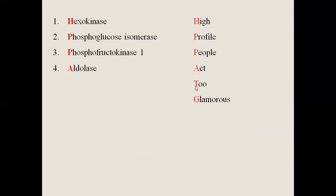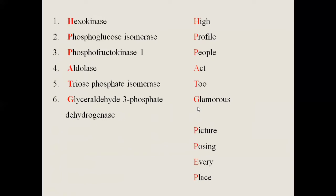'A' in 'act' stands for aldolase, 'T' stands for triose phosphate isomerase, and 'G' stands for glyceraldehyde-3-phosphate dehydrogenase. So 'high profile people act through glamorous' covers the first phase — the energy investment phase — while 'picture posing every place' represents the energy generating phase.